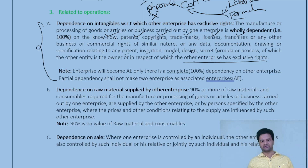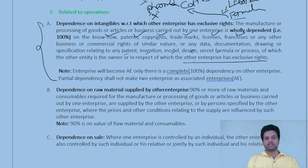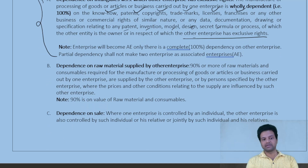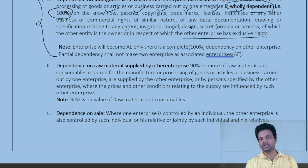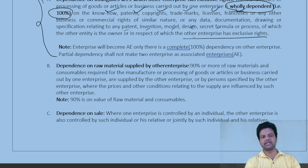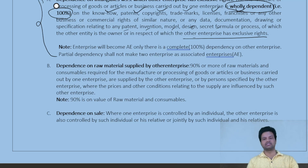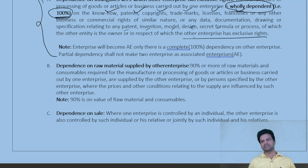You need not remember the exact definition — just understand the concept. This is about dependency on intangibles with respect to which another enterprise has exclusive rights. An important point: the law uses the word 'wholly dependent,' meaning 100%. If I manufacture 90% with one lab's formula and 10% from others, these are NOT associated enterprises — even 99% dependency would not qualify.